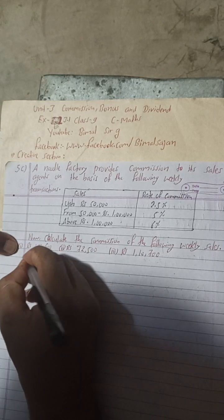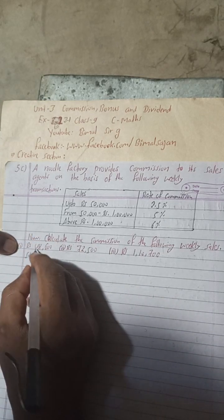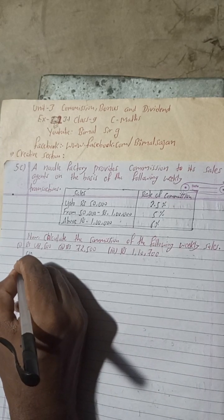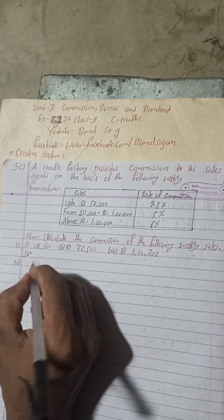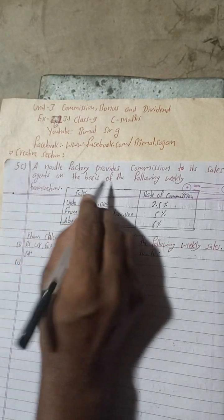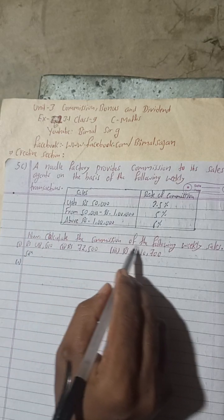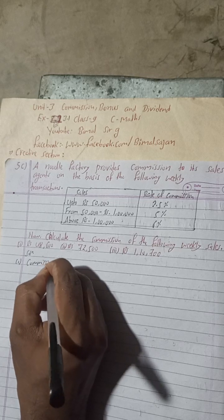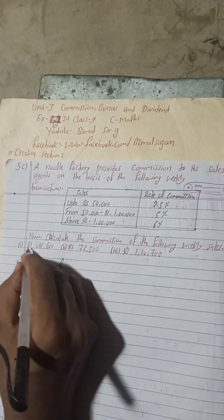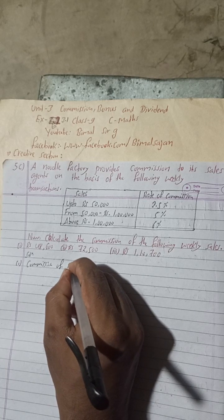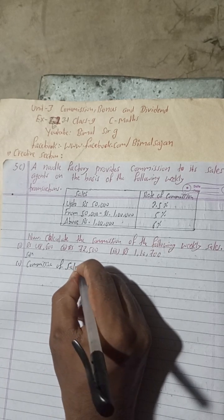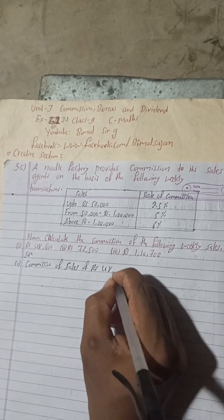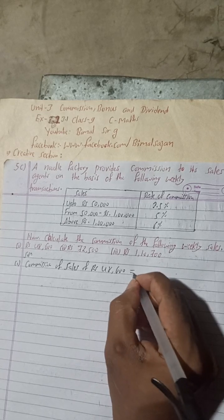Solution number one: we will calculate the commission for a sale of Rs 48,600.